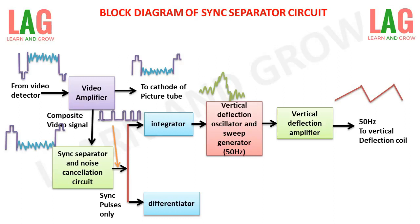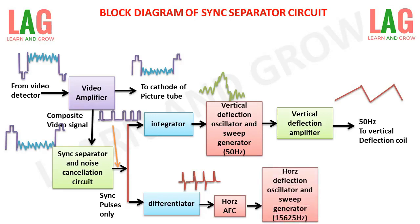The same synchronizing pulse obtained at the output of the sync separator is applied to the differentiator. The differentiator will differentiate the applied square wave and produce spike pulses. The output of the differentiator circuit is a spike pulse.